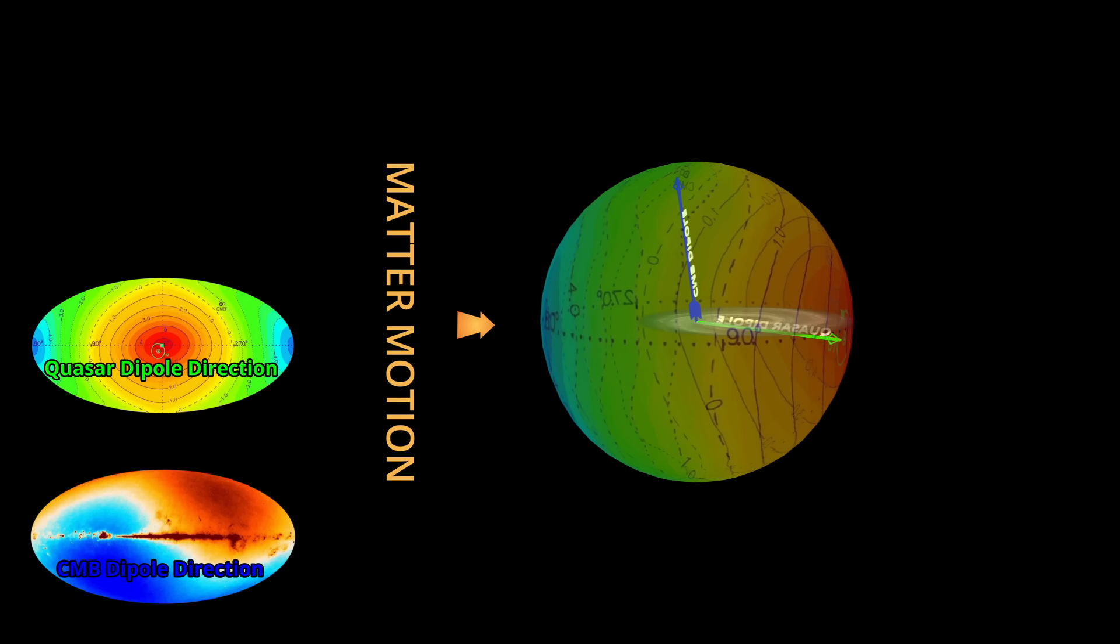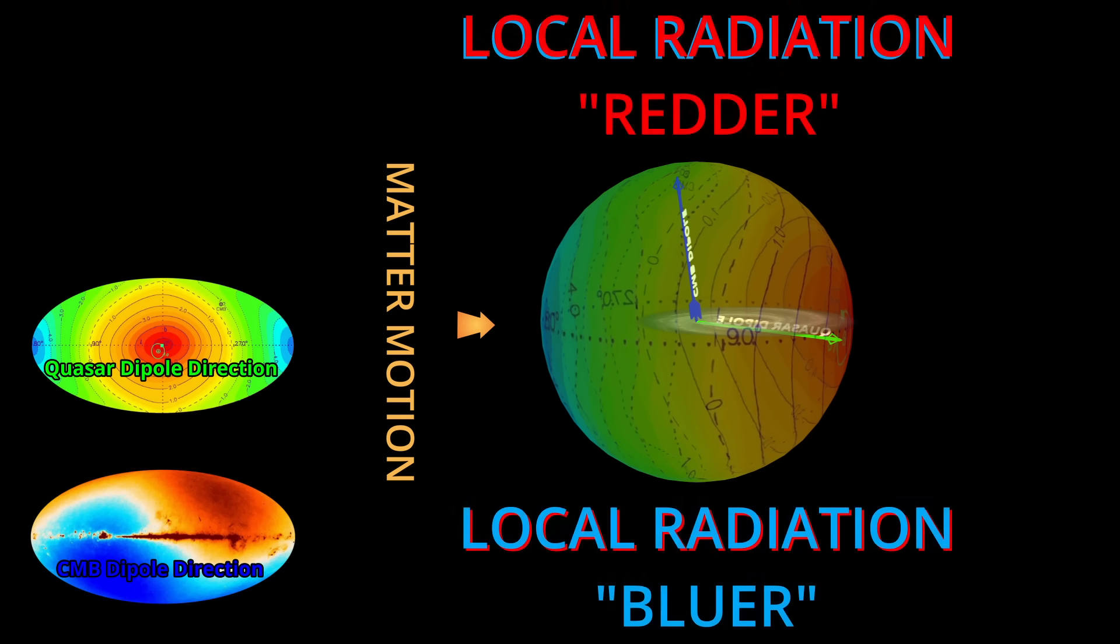The cleanest reading is that the CMB dipole is not a velocity at all. It's something else, most likely an anisotropy in a radiation field we have treated as universal and kinematic.